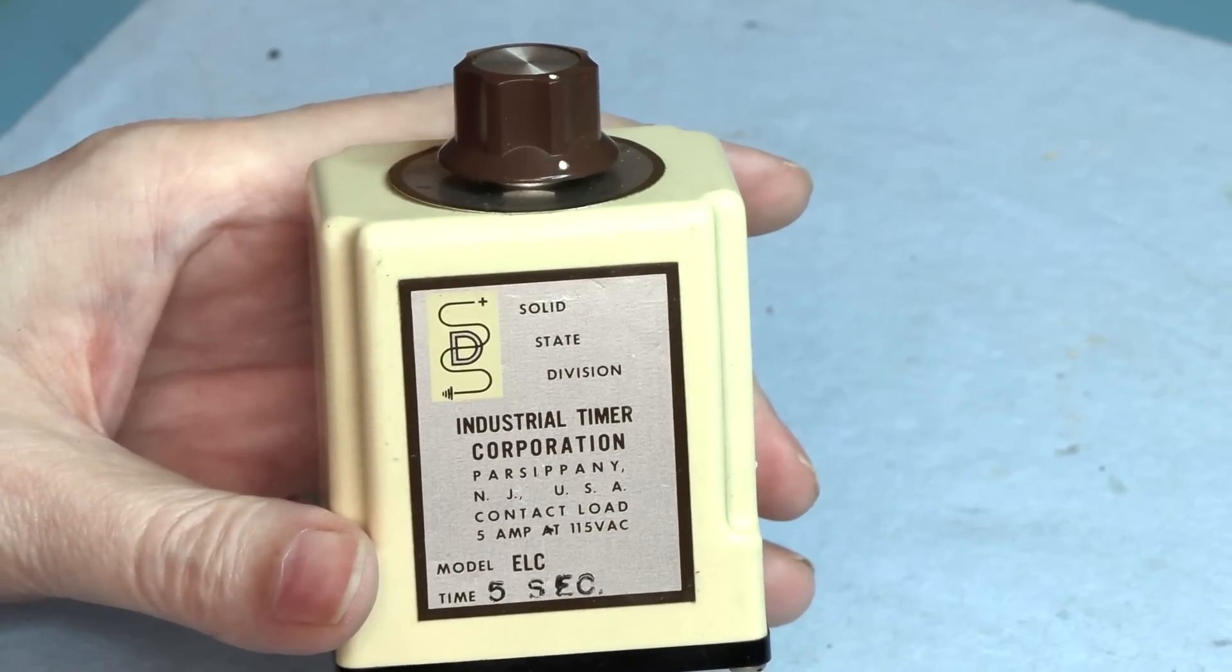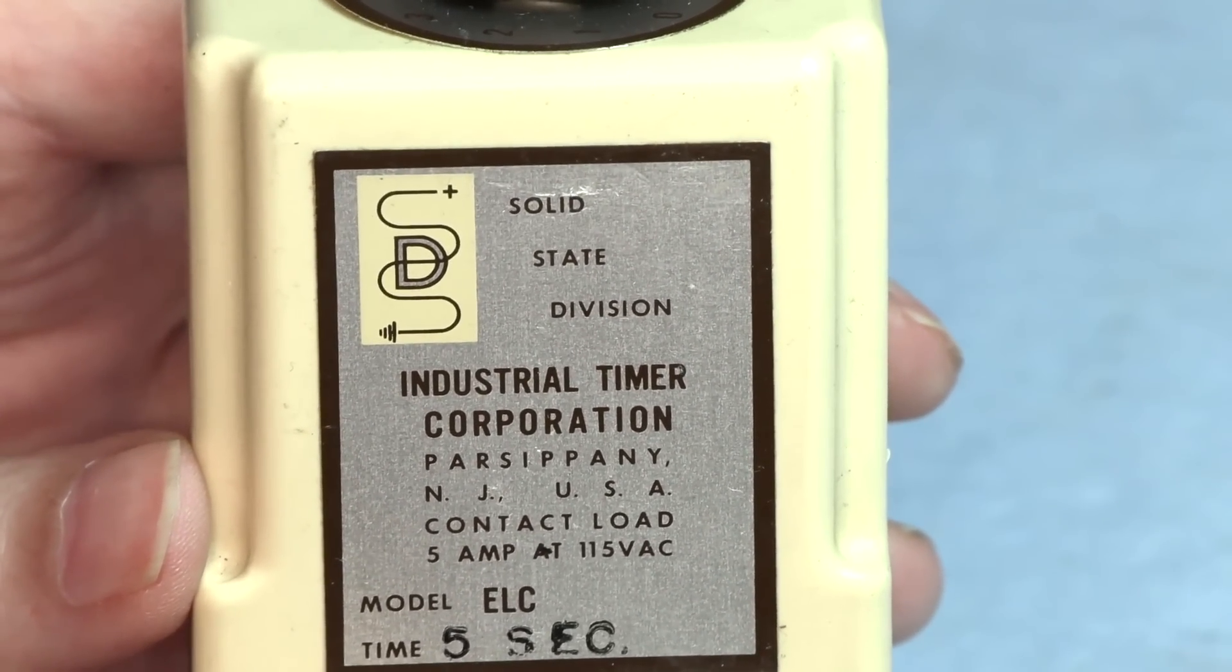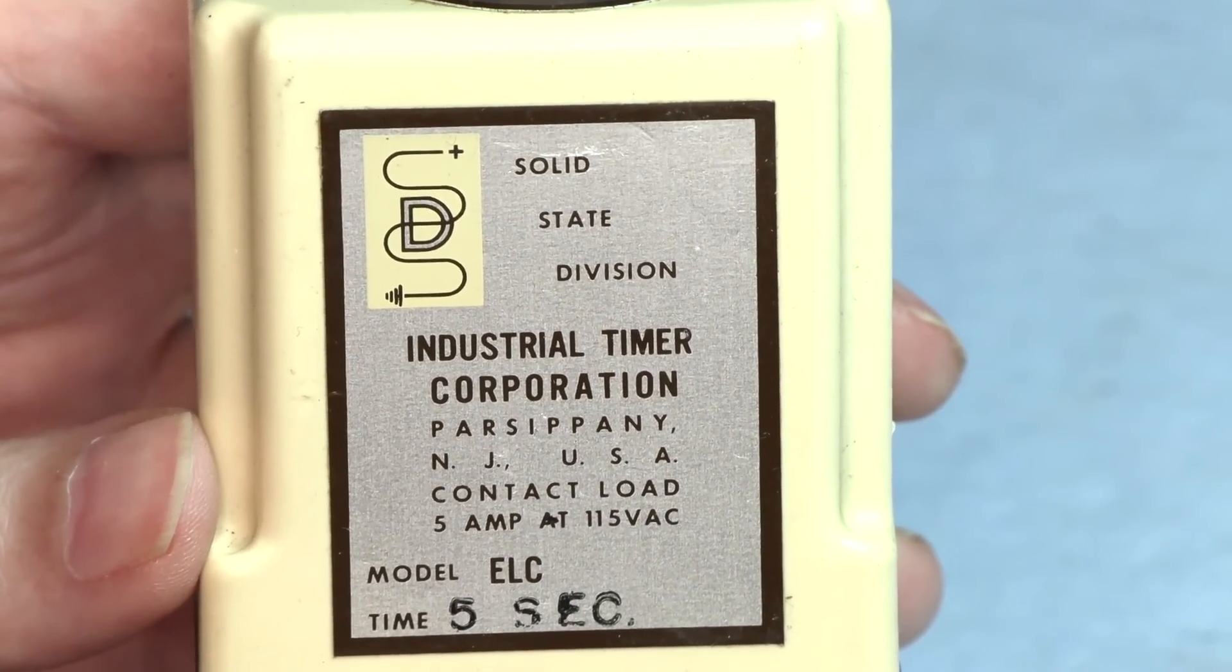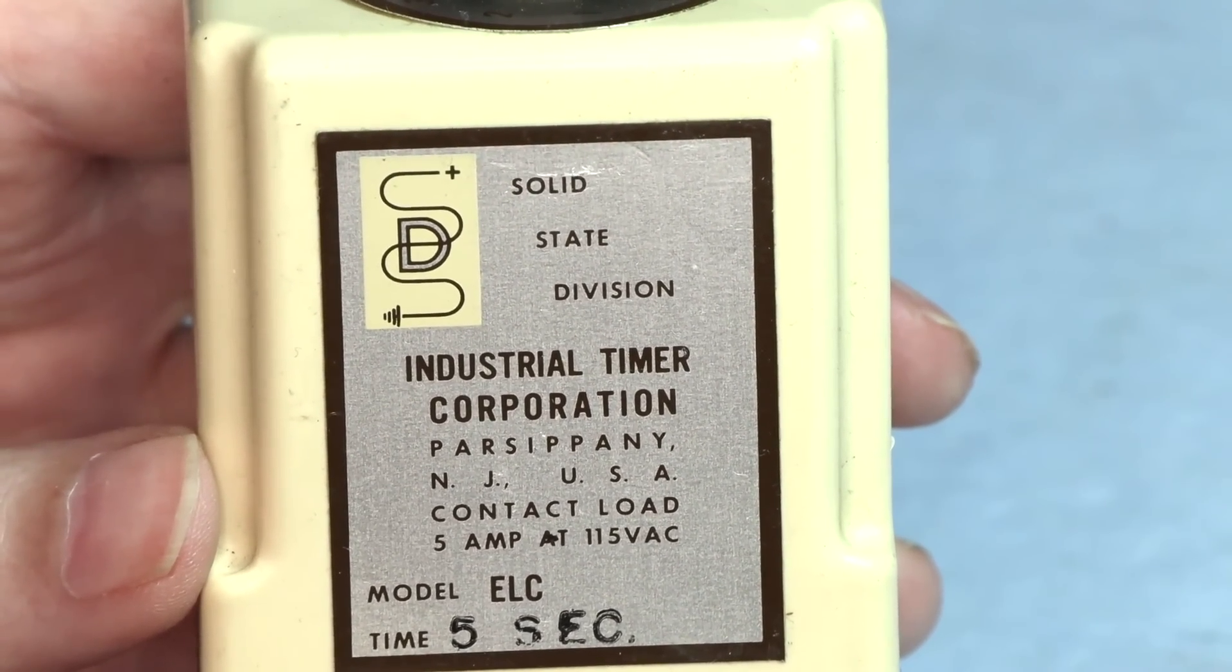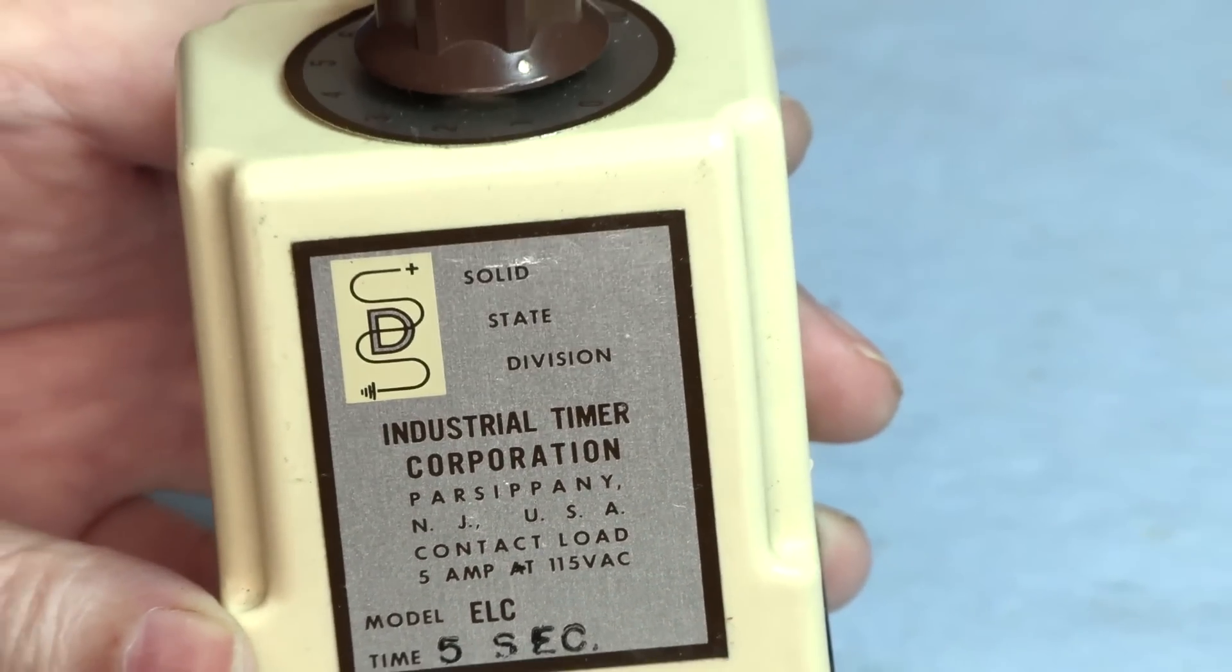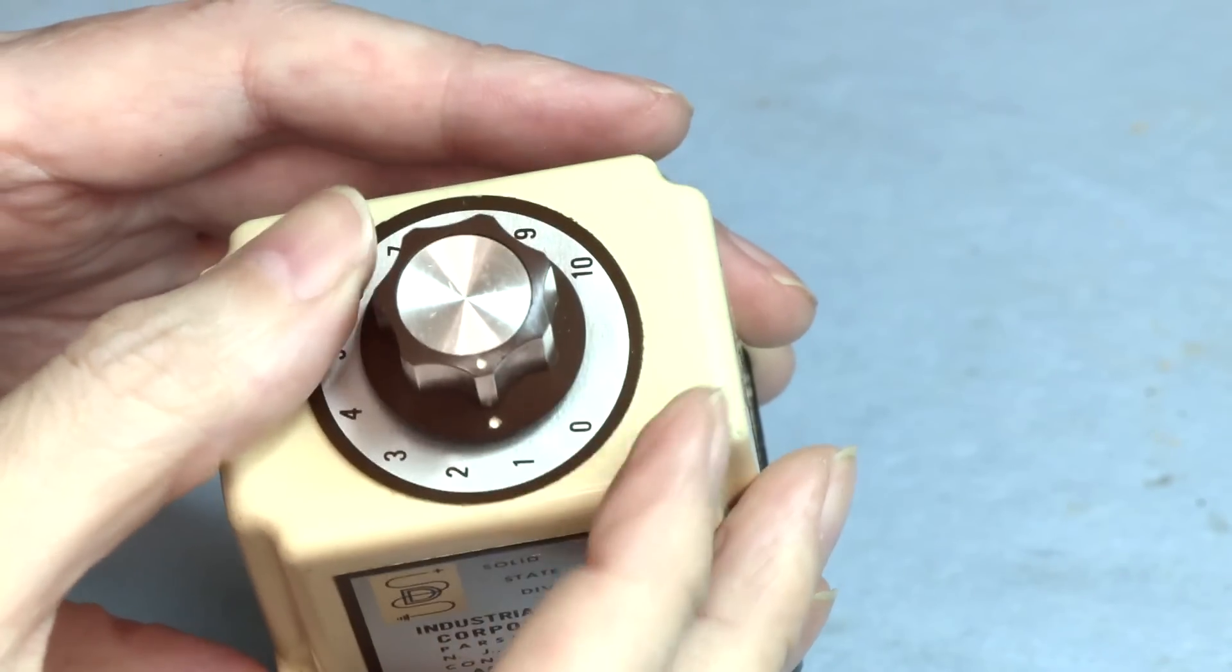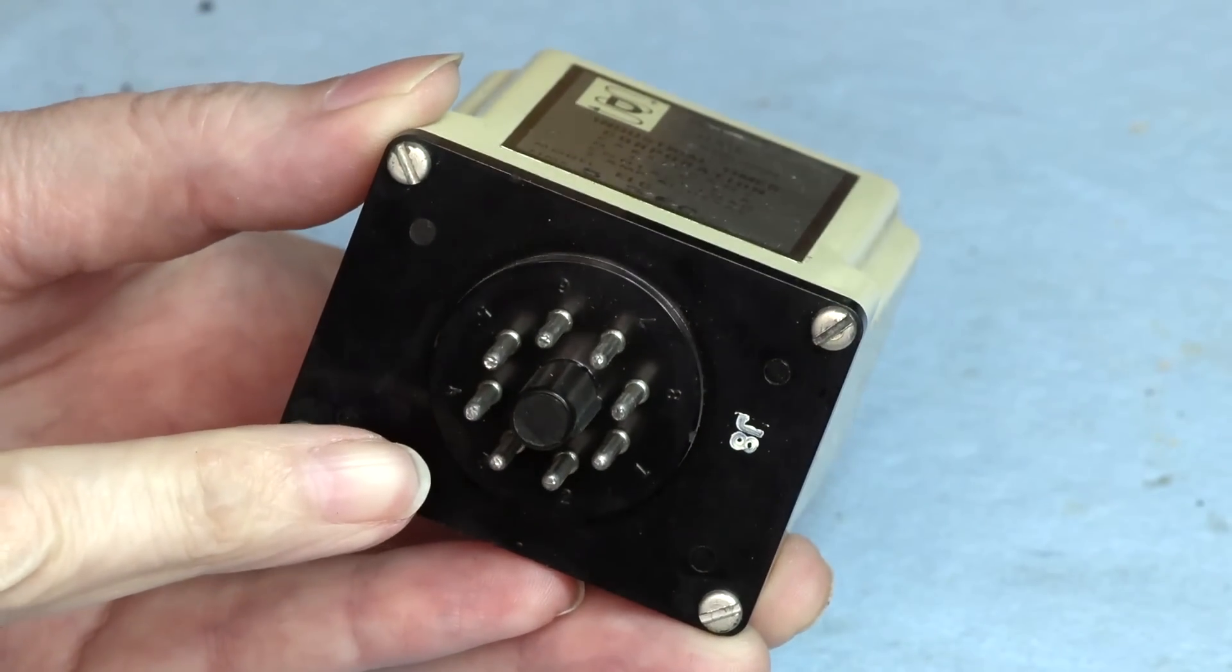It comes from the Industrial Timer Corporation in Parsippany, New Jersey, and it is the solid state division model ELC, 5-second timer, 5 amps at 115 volts AC. It does have the timer control on the top and comes with an octal socket on the bottom.